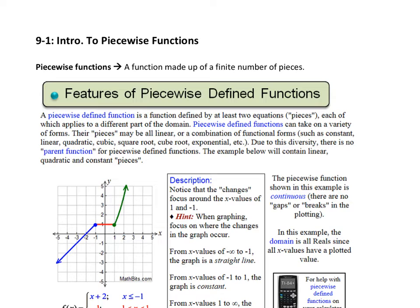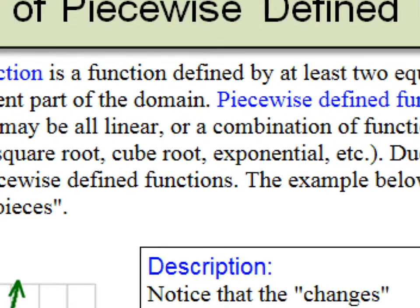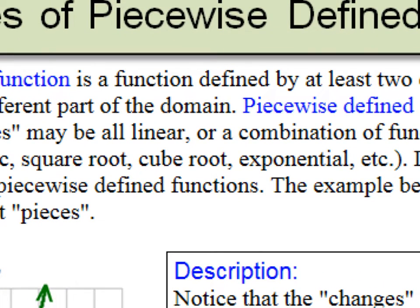So the features of a piecewise defined function. A piecewise defined function is a function defined by at least two equations that we'll be calling pieces. So you'll be hearing me say the word piece a lot, which applies to different parts of the domain. So this is what I would ask you: what's the domain? The domain is your x values. So we're going to put a little x above it.